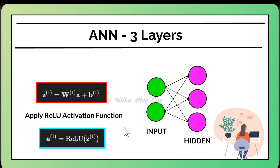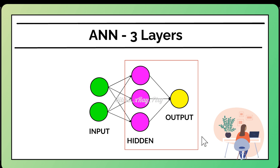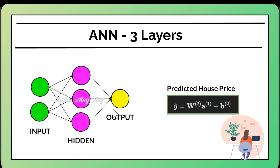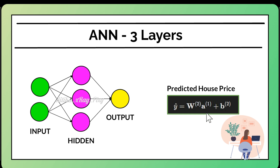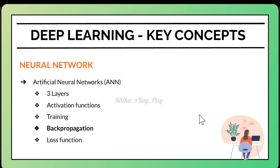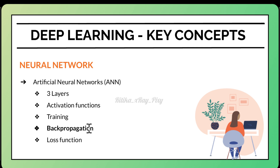For the hidden-to-output layer connection, we pass the hidden layer output to the output layer. The output layer neuron calculates a weighted sum of the hidden layer outputs, adds a bias, and applies a linear activation function since we are predicting continuous values. We calculate the output layer output using this formulation.